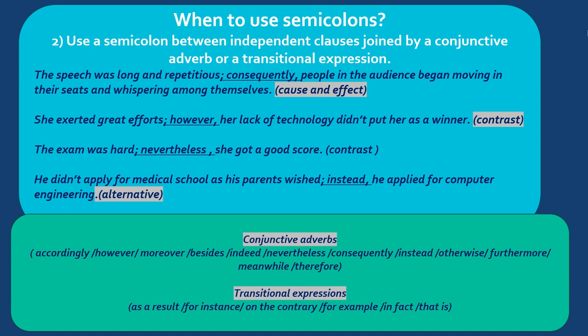Here are some conjunctive adverbs: accordingly, however, moreover, besides, indeed, nevertheless, consequently, instead, otherwise, furthermore, meanwhile, and therefore. Transitional expressions include: as a result, for instance, on the contrary, for example, in fact, and that is. If we have any word from either group, we put the first independent clause, then a semicolon, then the conjunctive adverb or transitional expression followed by a comma, then the second independent clause — again, not capitalized.